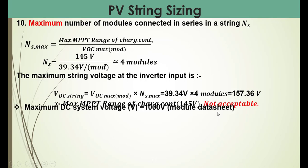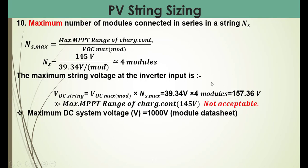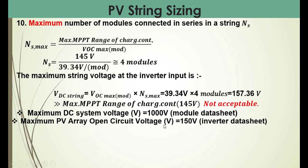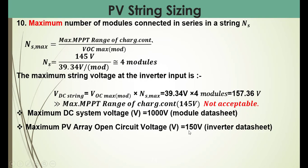This value of 157.36 volts is greater than the maximum MPPT range of the charge controller, which is 145 volts, so this is not acceptable. According to the inverter datasheet, the maximum PV array open circuit voltage equals 150 volts. To resolve this problem, we must reduce the DC voltage at the inverter input by reducing the number of series modules in the string — from four modules down to three modules.